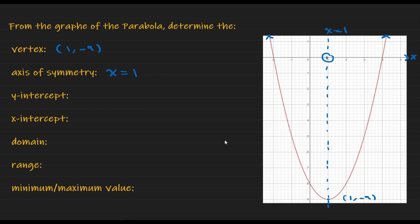Next, the y-intercept. The y-intercept is a point where the parabola intersects the y-axis. In this case the parabola intersects the y-axis at -8, so the y-intercept is -8. Next, the x-intercepts. The x-intercepts are the points where the parabola intersects the x-axis. In this case, the parabola intersects the x-axis at two points: -2 and 4, so the x-intercepts are -2 and 4.